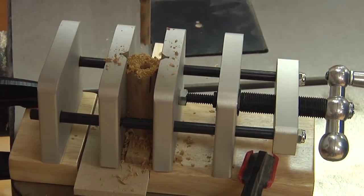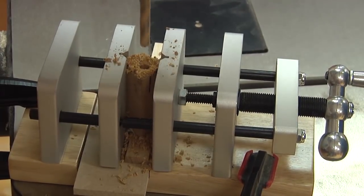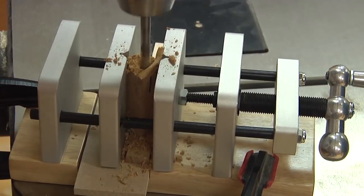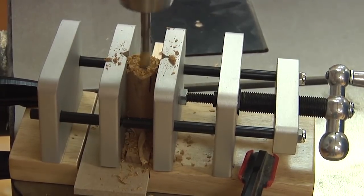If you don't want to invest in a centering vise, just a simple hand screw will hold the blank and mark the center. You can drill it just the same on the drill press.